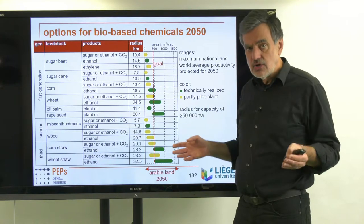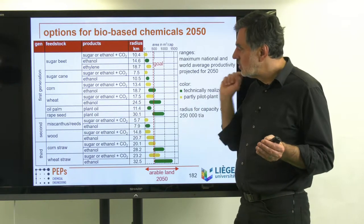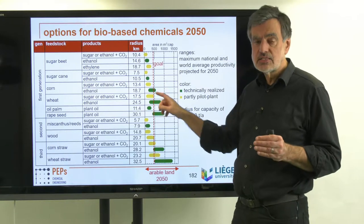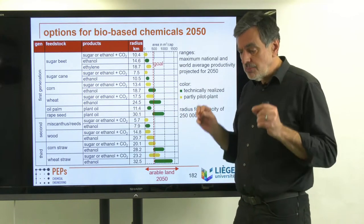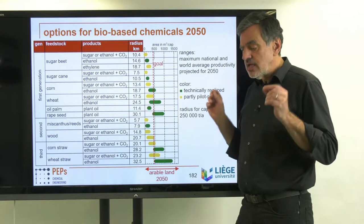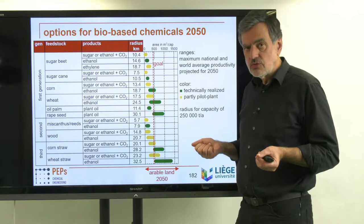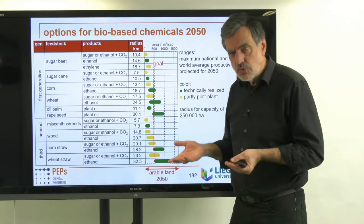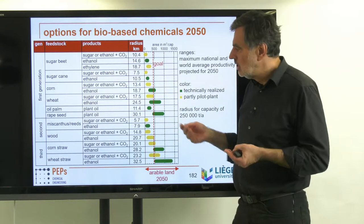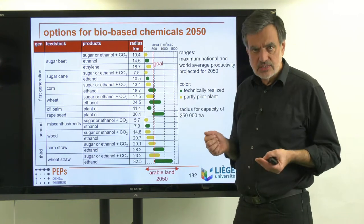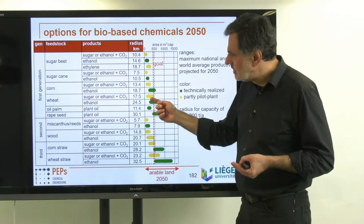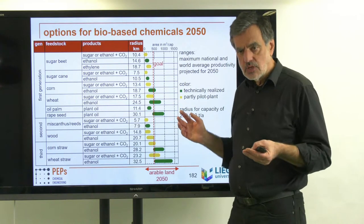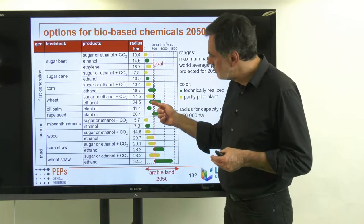The same analysis applies to sugarcane — I omitted the ethylene pathway since the relations are essentially the same and it is the least efficient, so no new information. Then for corn, wheat, and plant oils: oil palms can be used quite efficiently to produce plant oil, and the land area requirement is actually quite small. However, oil palm competes with primeval forests — cutting those down for plantations is detrimental for the climate, so that is marked with a question mark.